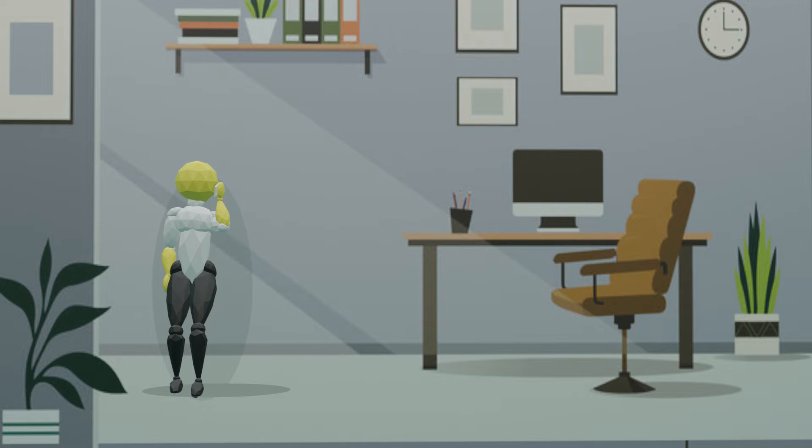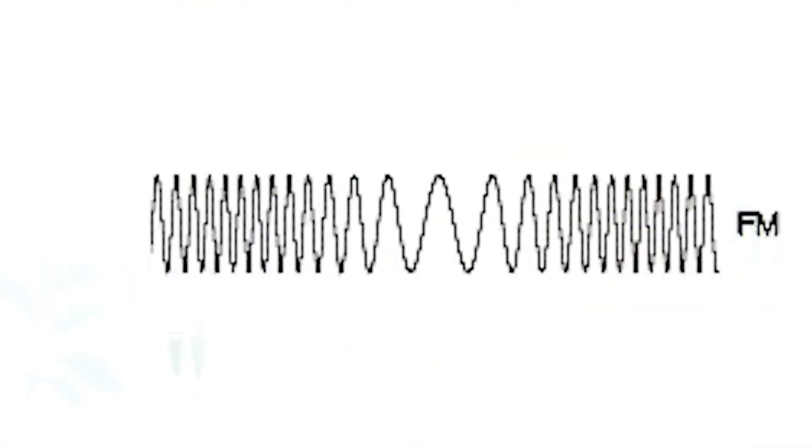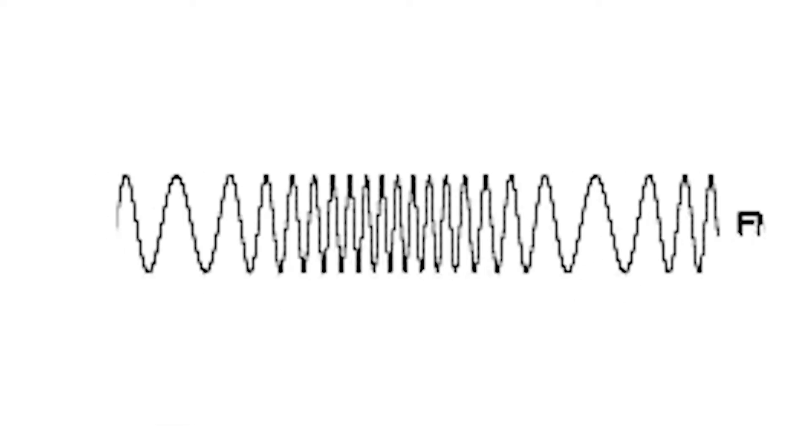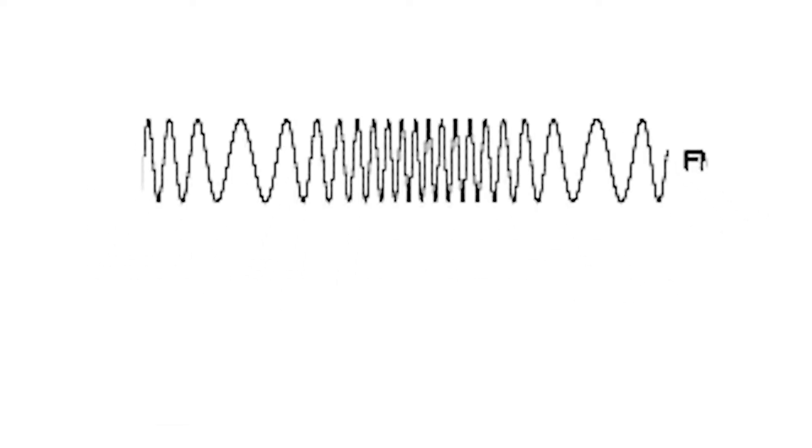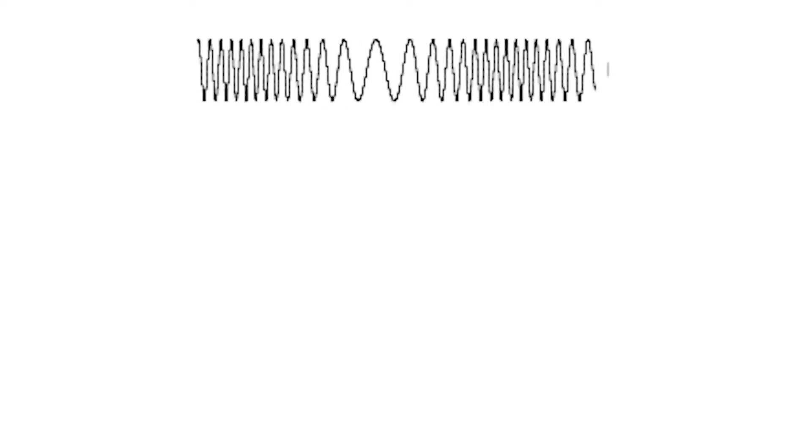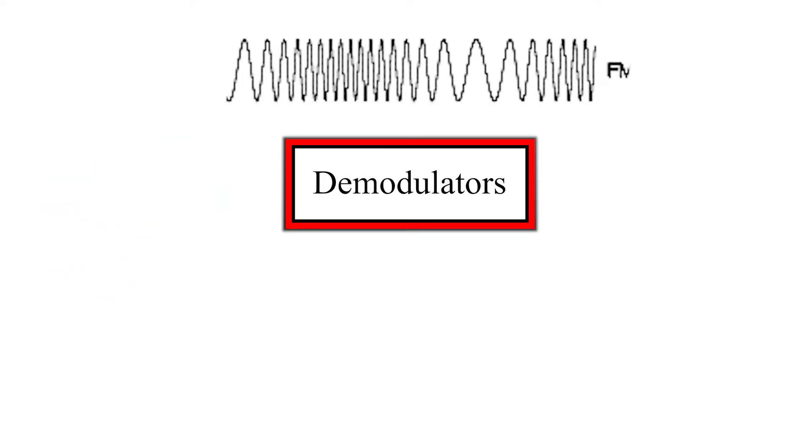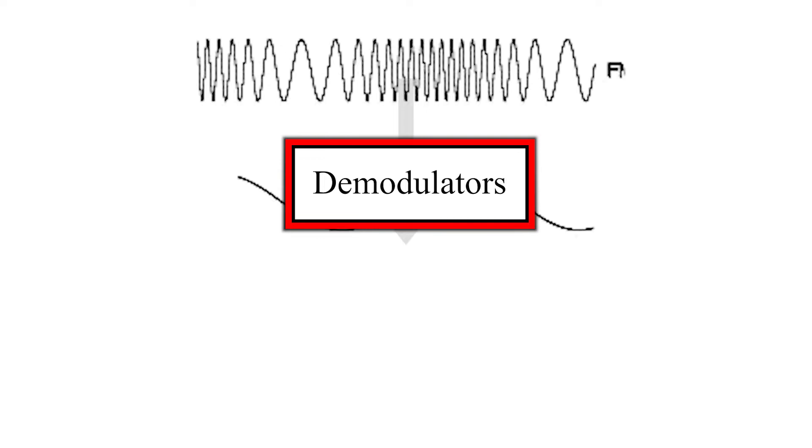Suppose you have a signal that is FM modulated. It has to be transmitted over a longer distance. The receiver won't be able to comprehend the direct FM modulated signal. Hence, a demodulator has to be used in order to obtain the original measured signal.